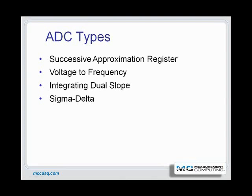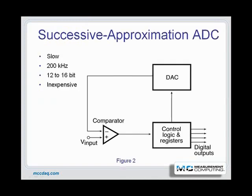The probability density function may be determined from these data. A large number of samples must be taken, depending on the ADC's size, for the histogram test to be meaningful. The more bits the ADC contains, the higher the number of samples required, which could be as many as 500,000 samples.